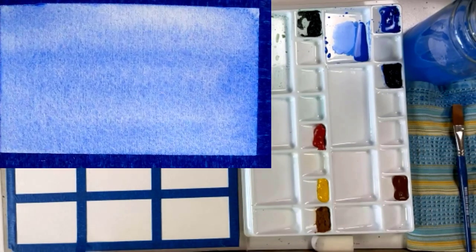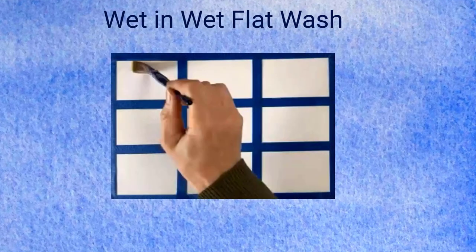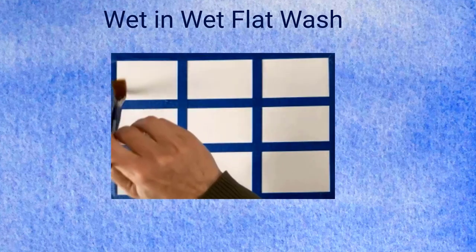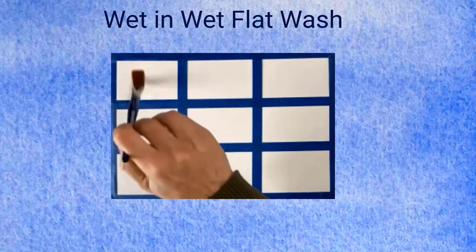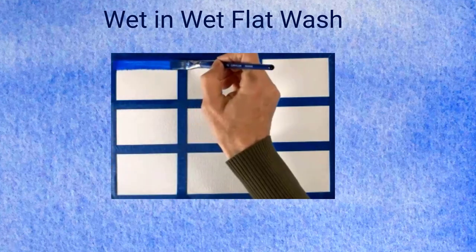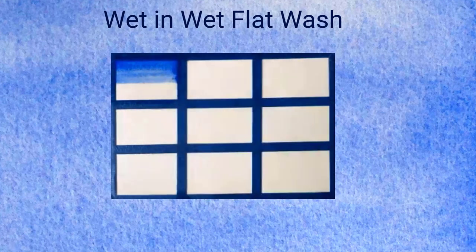So this is a wet on wet flat wash. Wet because we're doing it on wet paper. Whenever you wet your paper first, that is wet on wet. We use that to create a smooth, continuous wash. The water and paint just bleed into each other and flow, so it creates a really nice smooth finish.